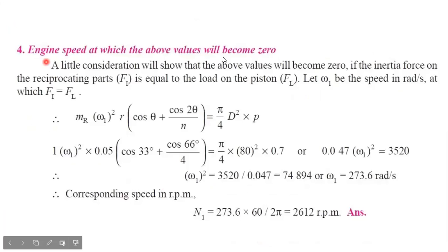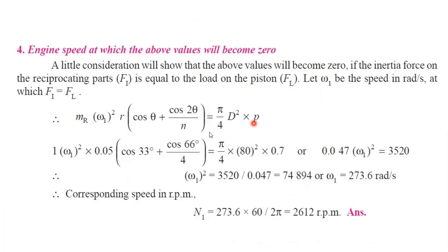The fourth part is the engine speed at which the above values become zero. This happens only when the inertia force equals the load on the piston: Fi = Fl. Let omega1 be the unknown speed. Write Fi in terms of omega1, set it equal to Fl, rearrange to solve for omega1, then convert: omega = 2πN/60. Cross-multiply to find the RPM.